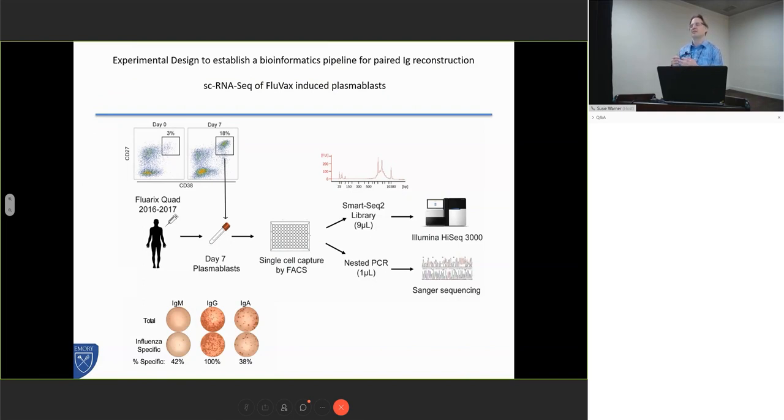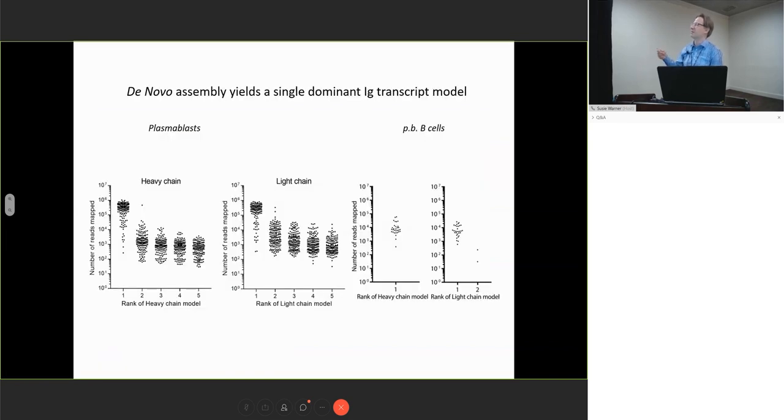To develop this pipeline we started with humans. We wanted to be able to reconstruct B cell heavy and light BCR sequences from single cell RNA-seq data. We started by vaccinating humans, sorting into 96-well plates, and then splitting our 10 microliter aliquot with our single cell into two aliquots—one that went for sequencing and one that went for conventional PCR.